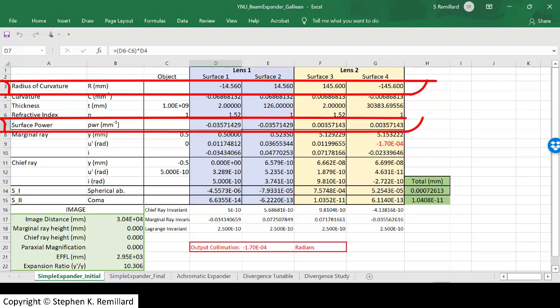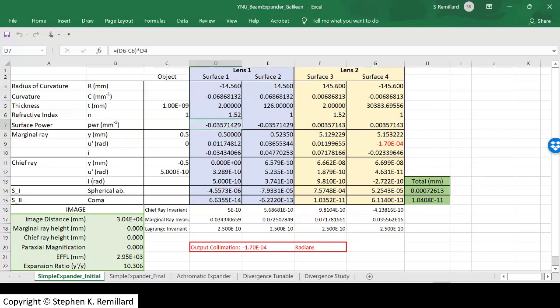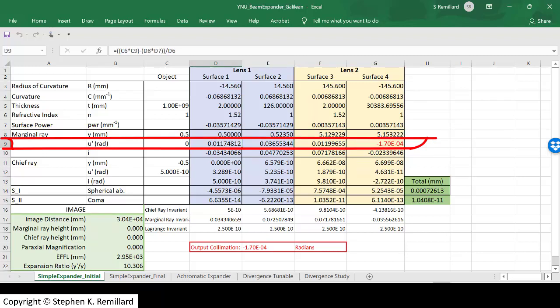The surface powers are automatically calculated. Using the paraxial ray trace equations for refraction at the surface and transfer between surfaces, the height of the marginal ray at the output of lens 1 and at the input of lens 2 and the output of lens 2 can be calculated, as well as the angles. There is an angle of refraction after the first surface and the second, third, and fourth surface as well.